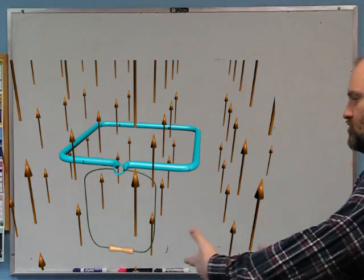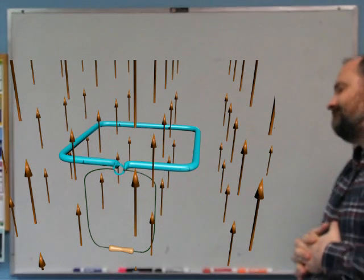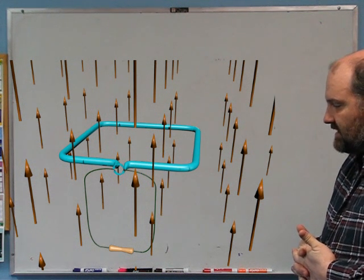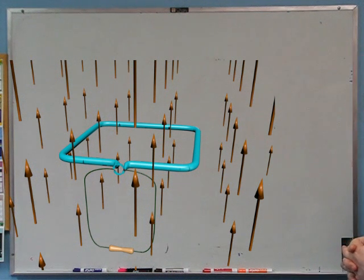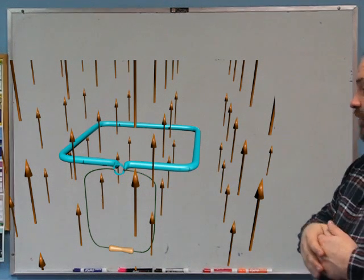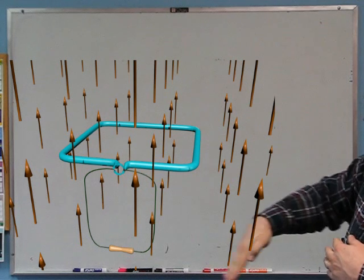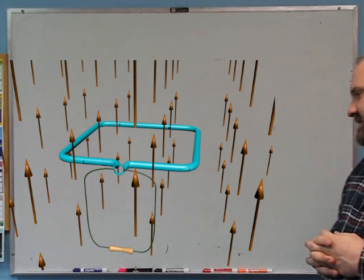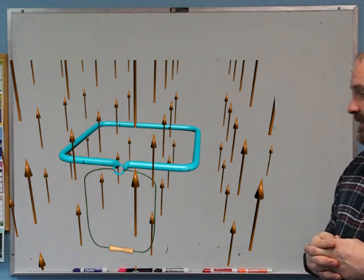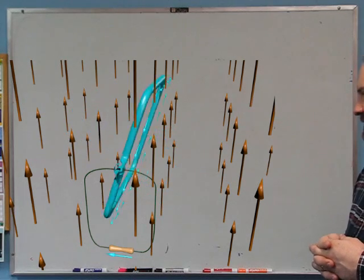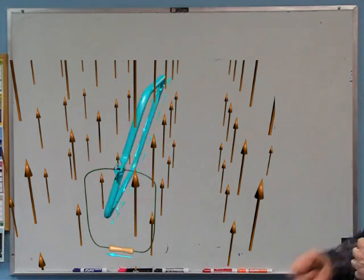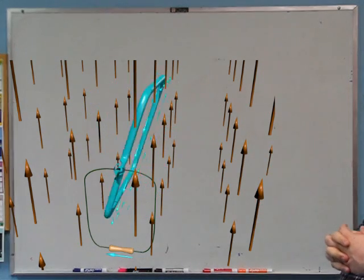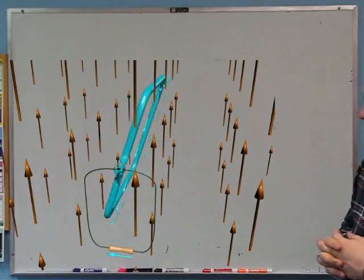Whether we think about the individual forces on the charge carriers being carried along with the wire, or whether we consider Lenz's Law, in both cases we can figure out a direction of magnetically induced current that — together with the action of the commutator — gives us current that is always to the left through the resistor. As the loop goes round and round, notice it oscillates: when it's vertical the current is biggest, when it's horizontal it's smallest.